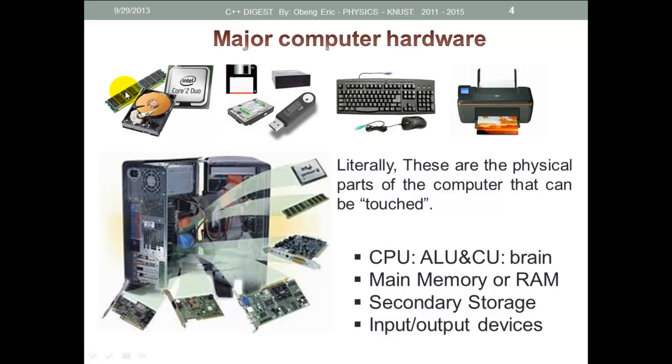Then we have the main memory. In case you haven't seen a physical memory before, this is a memory. This is also an Intel Core 2 Duo processor. This is a memory, or RAM (random access memory). Then we also have secondary storage devices such as the hard disk drive, diskette, CD-ROMs, and the USB flash drive. Then we have input and output devices such as keyboard, mouse, monitor, and printer. All these groupings form the main component or main parts of computer hardware.